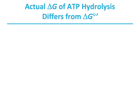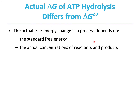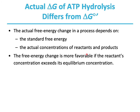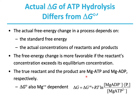The actual free energy change in a process depends on the standard free energy and the actual concentration of reactants and products. The free energy change is more favorable if the reactant's concentration exceeds its equilibrium concentration. The true reactant and product are Mg-ATP and Mg-ADP respectively, and the standard free energy change is also Mg-dependent. Hence, the actual free energy change equals the standard free energy change plus RT ln of the concentration of Mg-ADP times phosphate divided by the concentration of Mg-ATP.